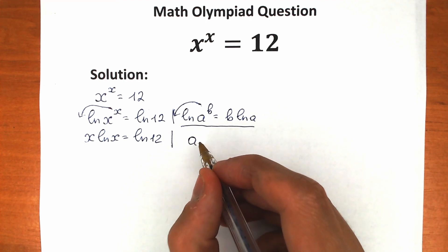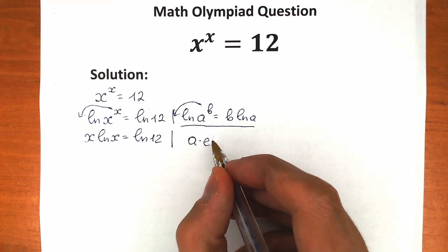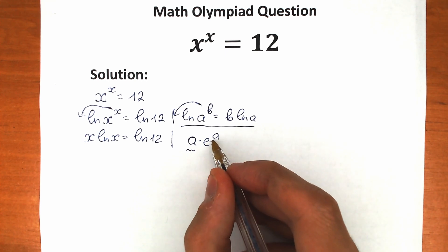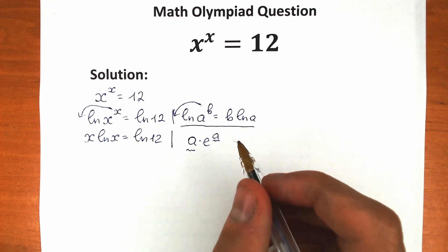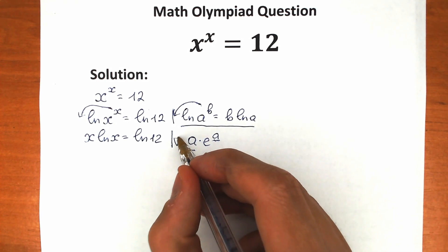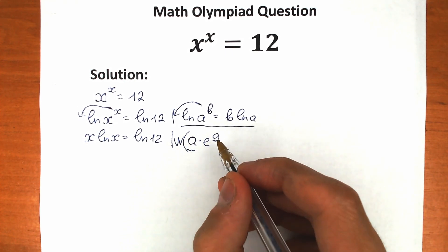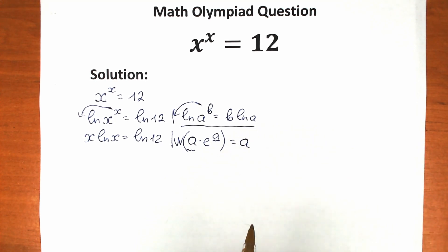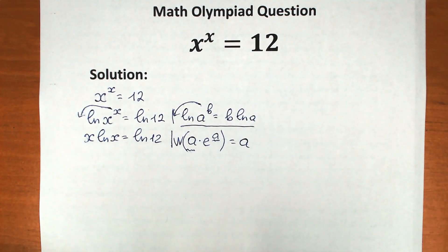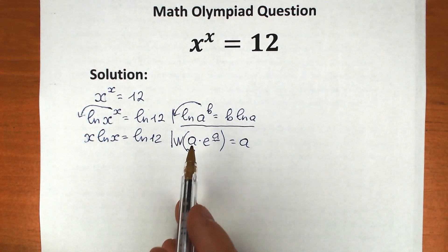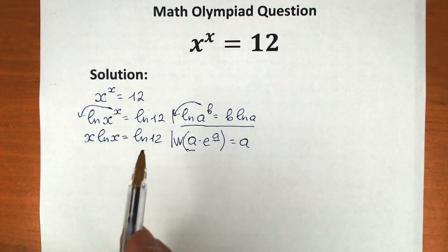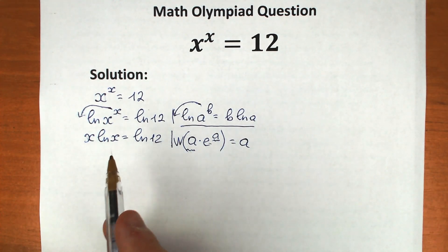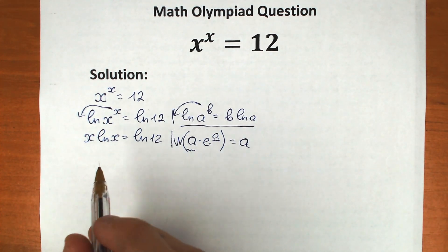If you have an expression like a times e to the power a — the same expression both as a coefficient and as the power of e — and you apply the Lambert W function to it, the result is simply a. We need to create this form, but right now we don't have e in our expression.